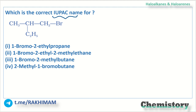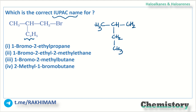Here we can see that this is C2H5. Let me open this particular compound for you. So here, this is CH3, then this is CH, then CH2, and then CH3. Here we also have CH2, and this is bromine.